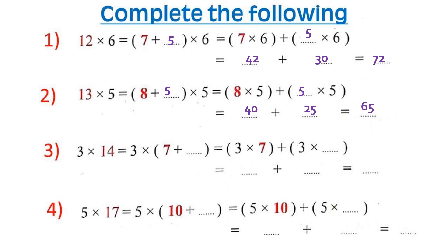Number 3: 3 times 14. We can break 14 into 7 plus 7. So 3 by 7 plus 3 by 7 equals 21 plus 21 equals 42.